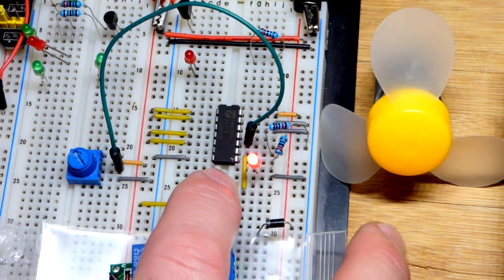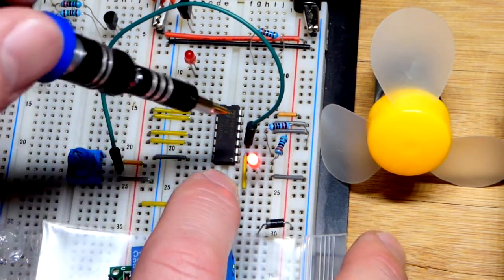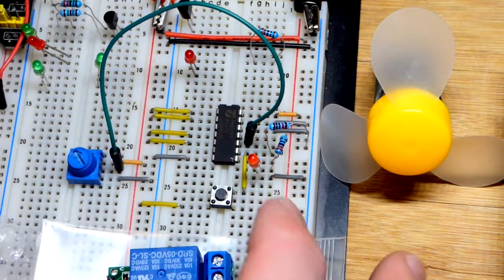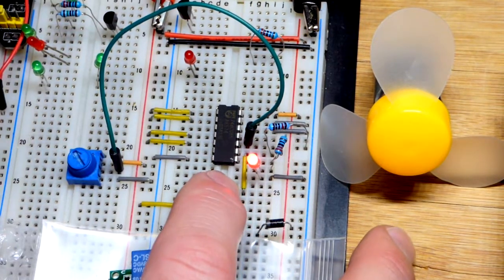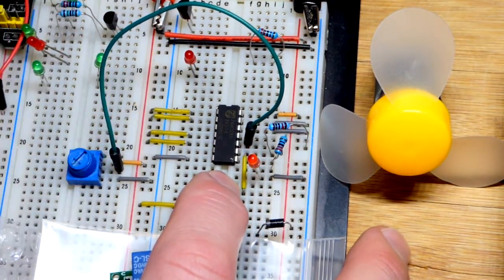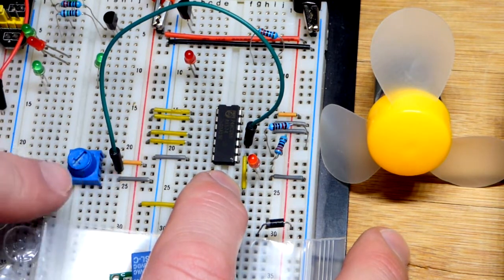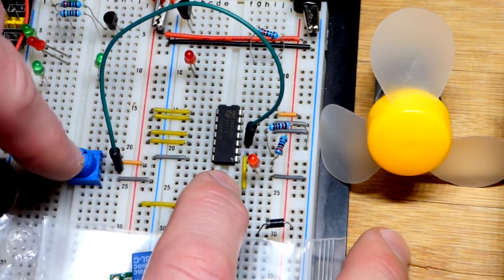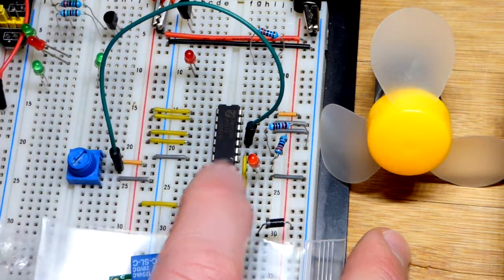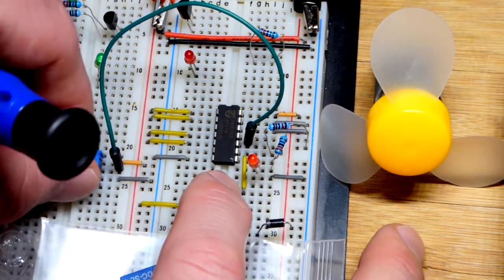That one's high but you can't really tell until you press the button here. We give a high signal to both inputs, the output goes high. If I hold this one down and turn the trim pot towards a more negative little halfway point, now we have a low input and a high input and the output goes low.